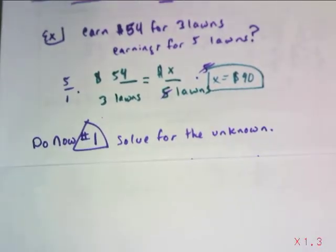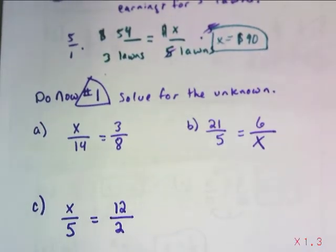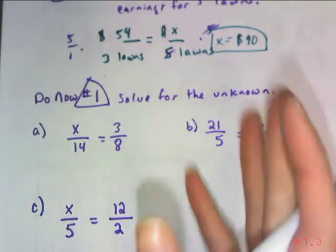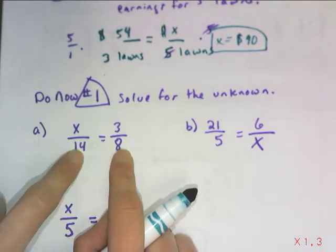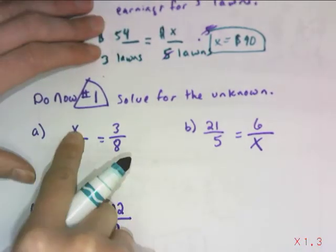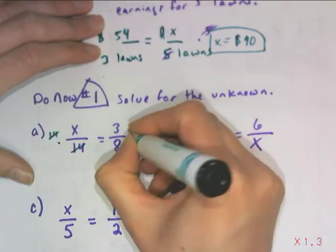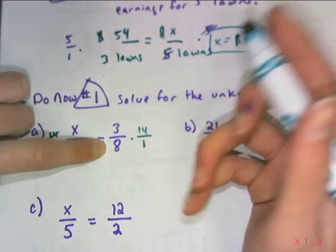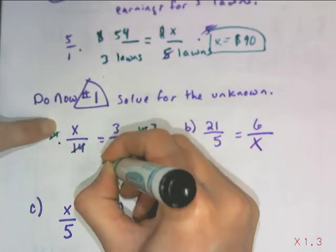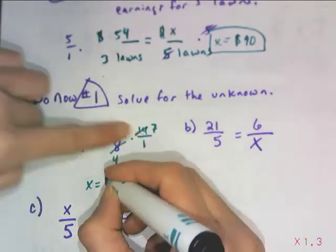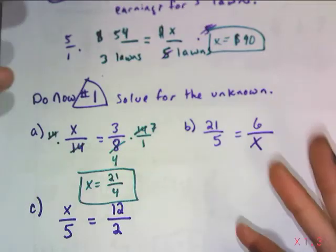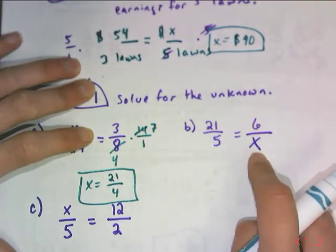So now try these on your own for do now number 1, and I want you to solve for the unknown using either the scale factor method showing your arrows and your scale factor, or you can use IMPO. For this one, I looked and you might have noticed that you could have simplified here if you had wanted to. So 14/8 isn't relatively prime, but if you wanted, you just saw that x was on top. Go ahead and IMPO the 14, and then maybe you see that it's more obvious to divide 14 and 8 by the common factor of 2. So I half it, and then I half it, and then x equals 3 times 7, 21/4. So it is relatively prime.